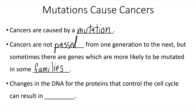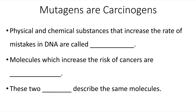Changes in the DNA for proteins that control the cell cycle can result in cancers. Physical and chemical substances that increase the rate of mistakes in DNA are called mutagens. These can include chemicals in tobacco smoke and things like ultraviolet light. Molecules which increase the risk of cancers are called carcinogens.